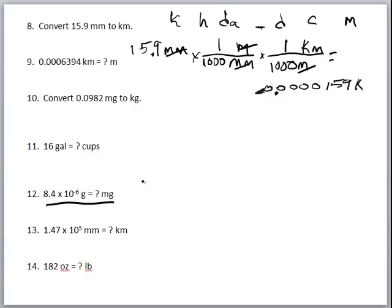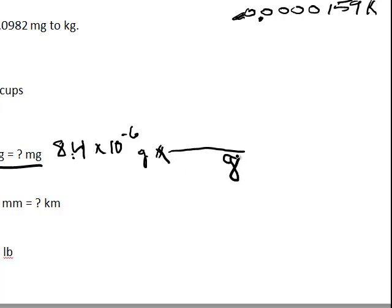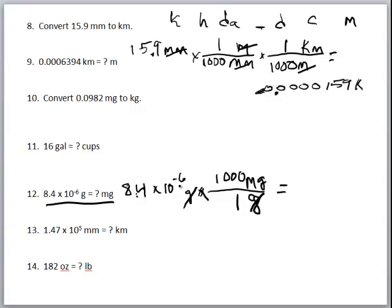Let's do this one using scientific notation. For dimensional analysis, we have 8.4 times 10 to the negative 6th grams converting to milligrams. Grams goes in the denominator, milligrams in the numerator — there are 1,000 milligrams in a gram, so grams cancel. 8.4 times 10 to the negative 6th times 1,000 gives us 8.4 times 10 to the negative 3rd milligrams. If you're moving the decimal, the exponent goes three places from negative 6th to negative 3rd.